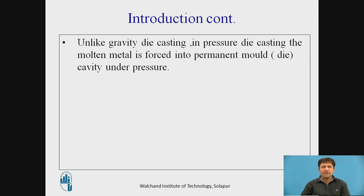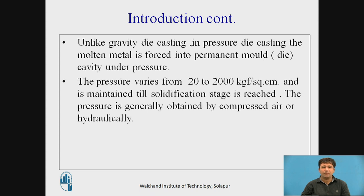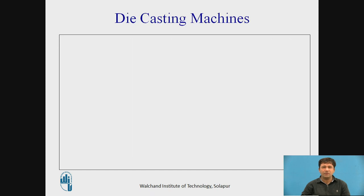Unlike Gravity Die Casting, in Pressure Die Casting the molten metal is forced into the permanent mold — also called a Die — cavity under pressure. The pressure varies from 20 to 2000 kgf per square centimeter and is maintained until solidification is reached. The pressure is generally obtained by compressed air or hydraulically. This is the basic difference between Gravity Die Casting and Pressure Die Casting.